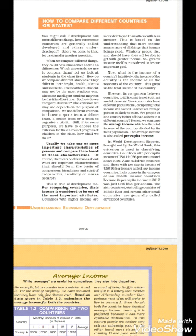The World Development Report brought out by the World Bank has classified countries based on per capita income. Countries with a per capita income of US $12,056 per annum and above in 2017 are listed as rich countries. Countries with per capita income of US $955 or less are listed as low-income countries. India comes under the low-income category, as India's per capita income in 2017 was just US $820 per annum.